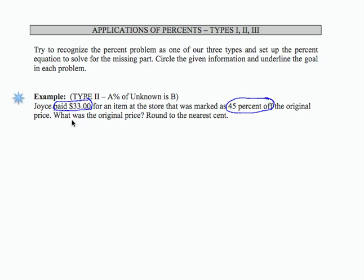So what we want to find out is what was the original price, and we want to round to the nearest cent. This one is a little bit tricky because we have to think in terms of a whole 100%.